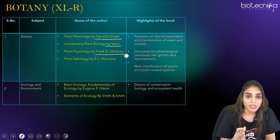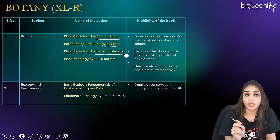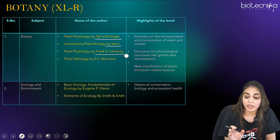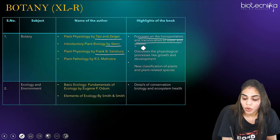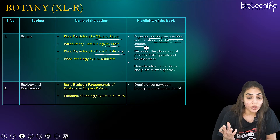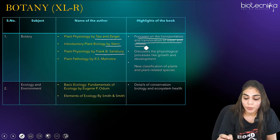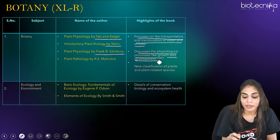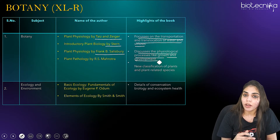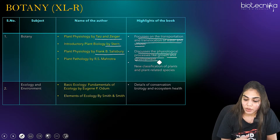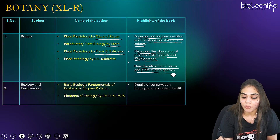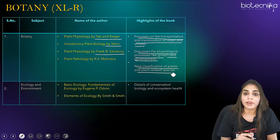You have to study any one reference book of your choice. After completing the GATE Life Sciences syllabus from these botany books, you will gain knowledge of transportation and translocation of water and solutes, physiological processes like growth and development, and all basics and advanced knowledge of plant physiology. It also discusses the new classification of plants and plant-related species.